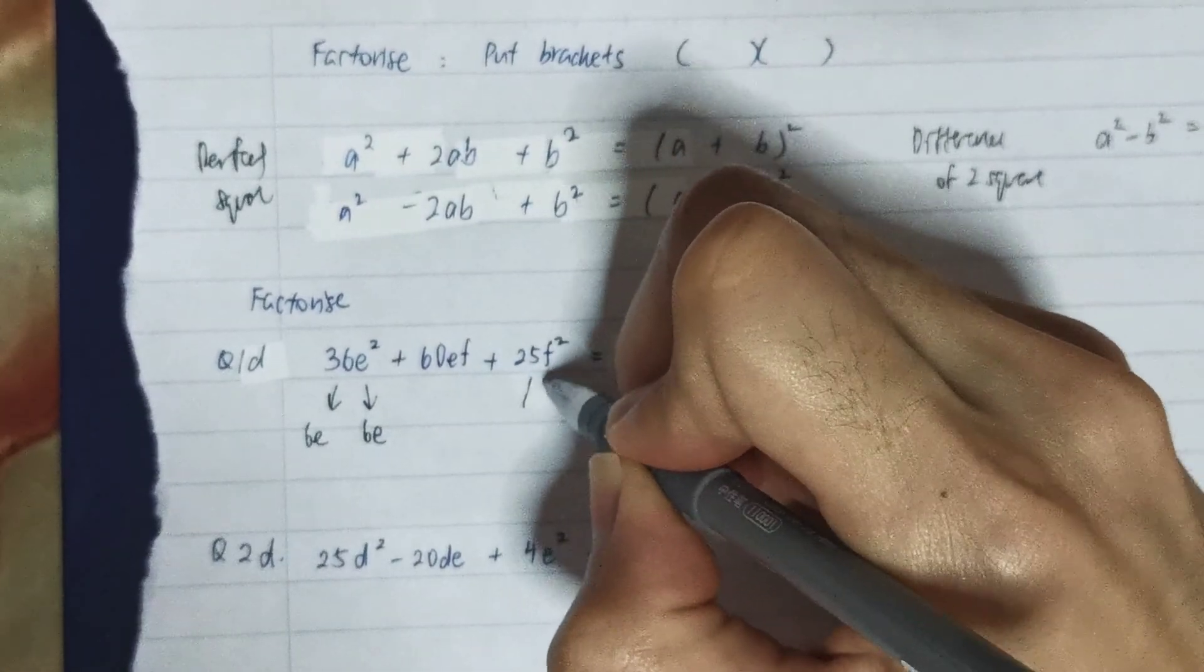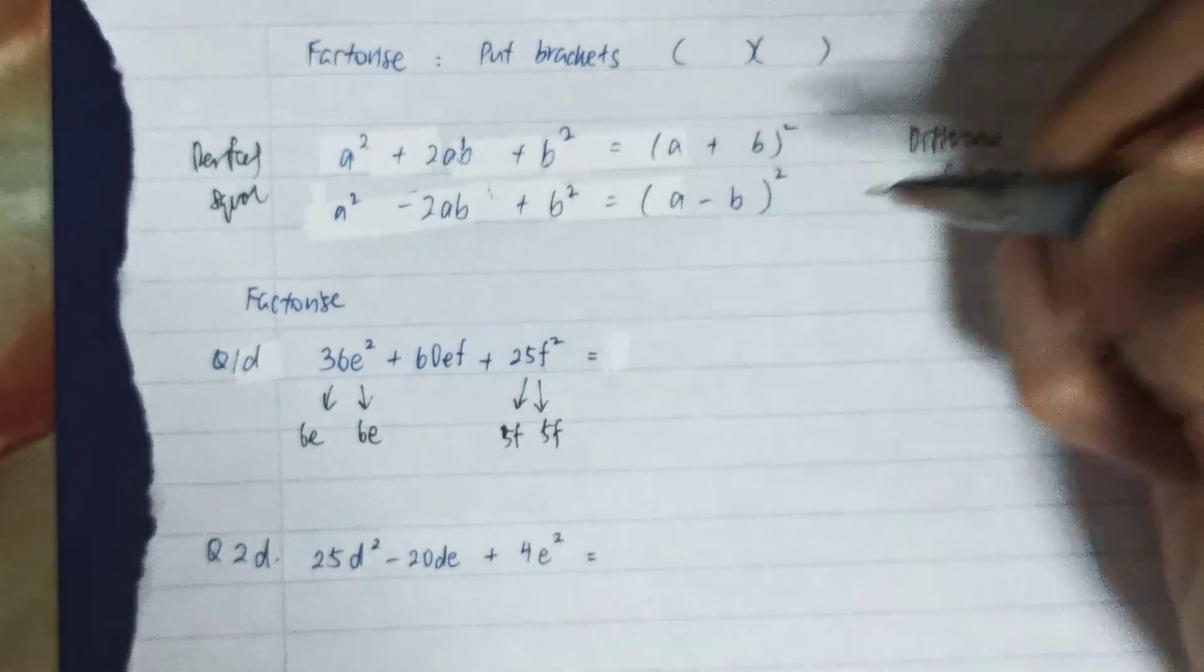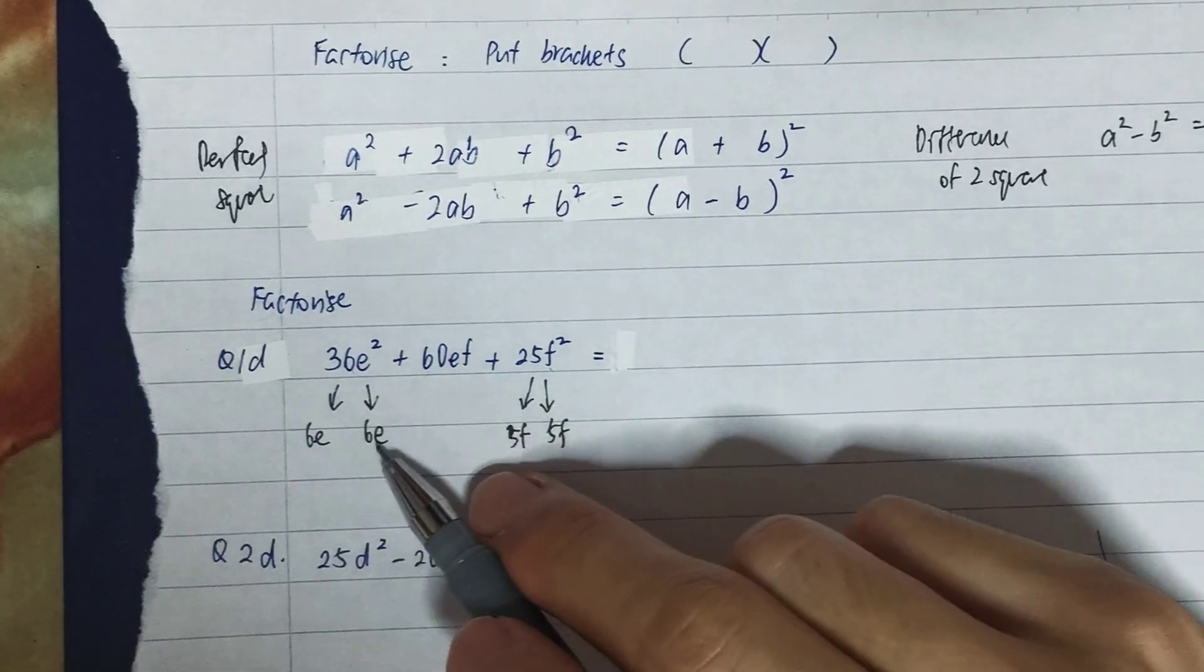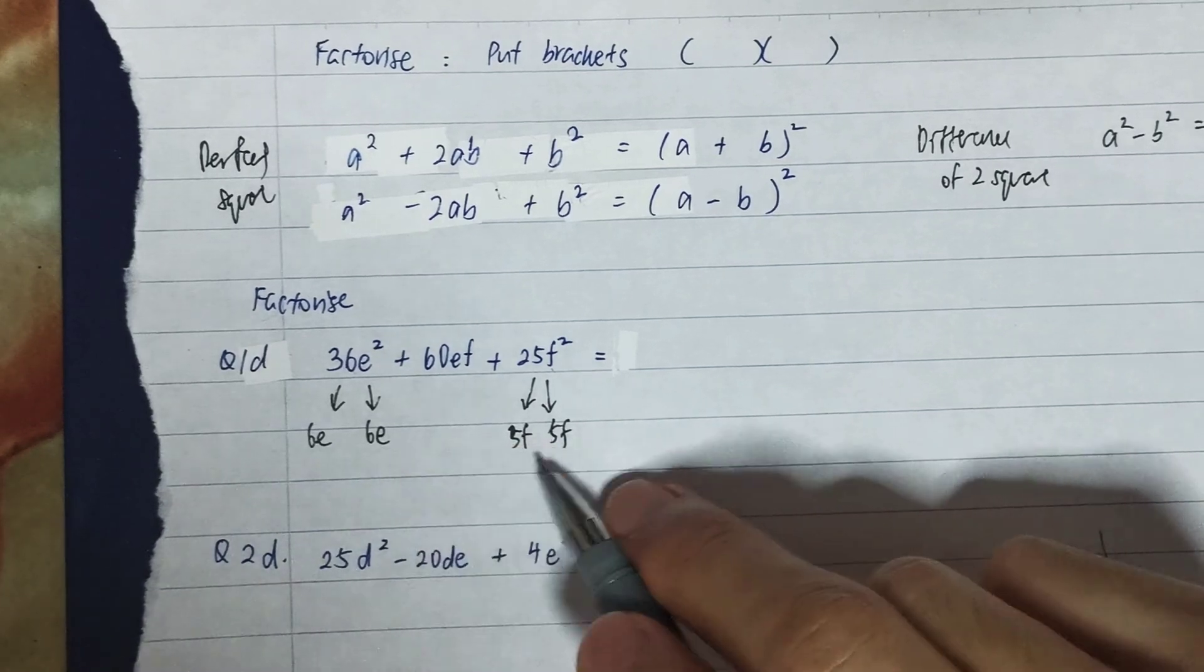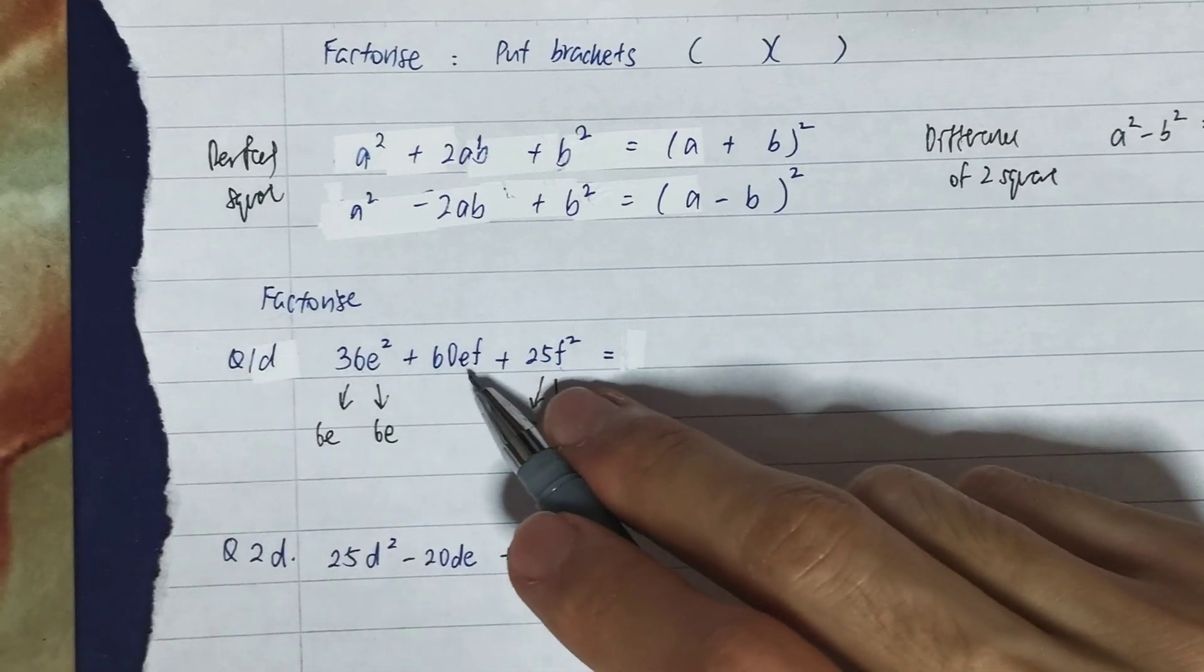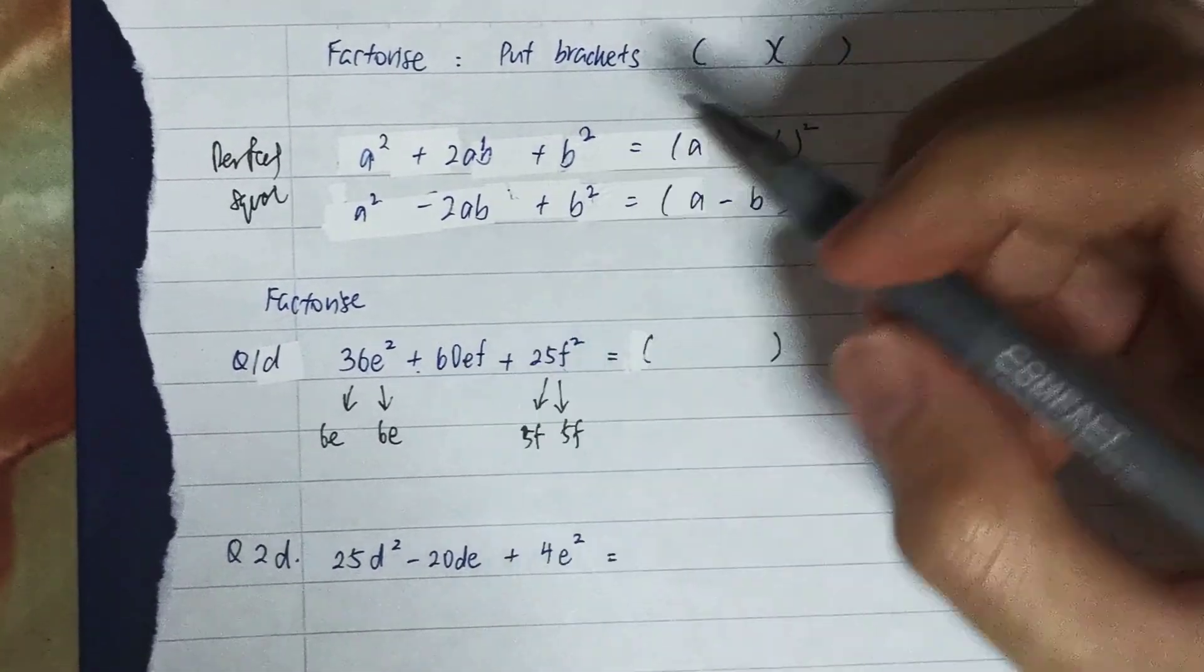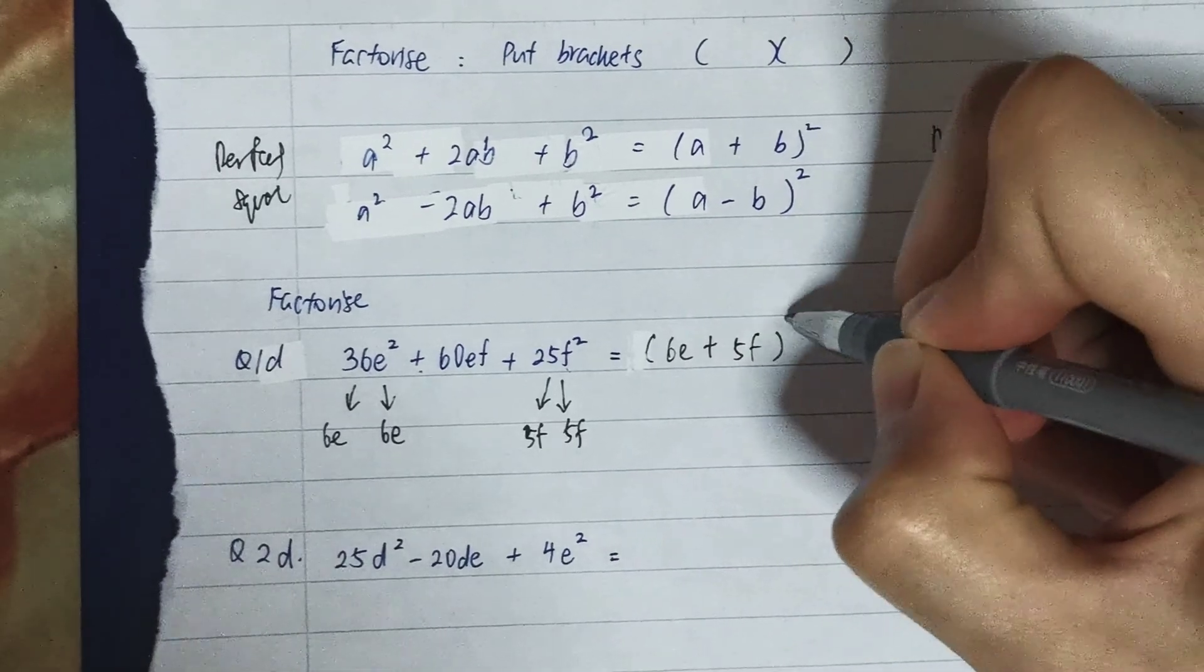While for 25f² it will be 5f times 5f, and we need to check whether the middle number is 2 times 6e times 5f. In this case, 6e times 5f gives me 30ef, and 30ef times 2 is 60ef. That's correct, so I can say that this expression is (6e + 5f)².